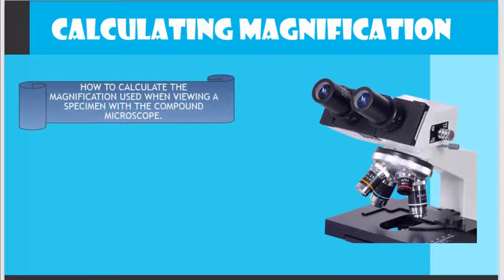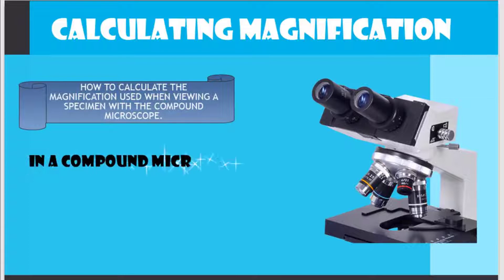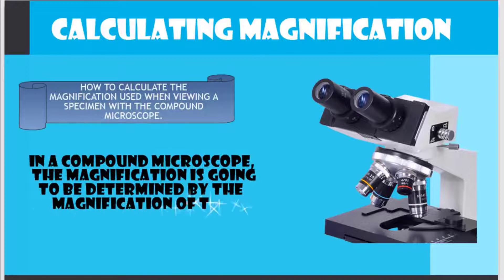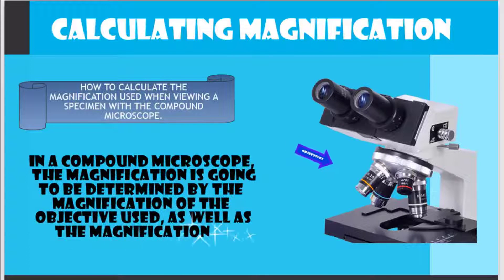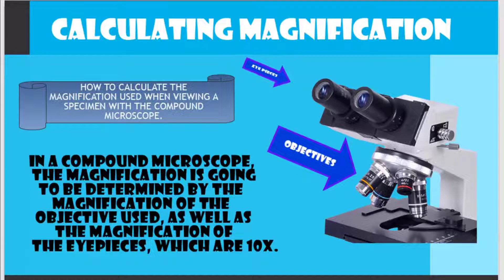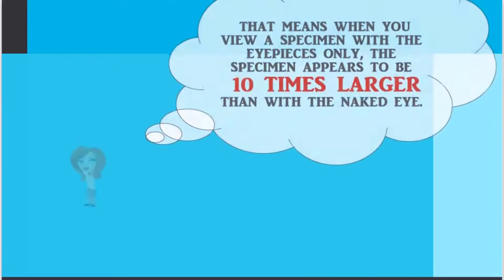Calculating magnification: how to calculate the magnification used when viewing a specimen with a compound microscope. In a compound microscope, the magnification is determined by the magnification of the objective used as well as the magnification of the eyepieces, which are 10x.